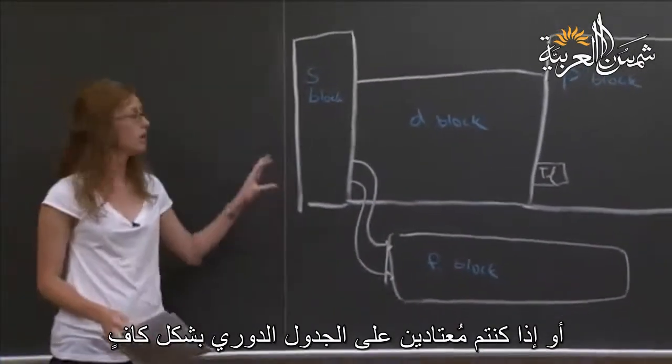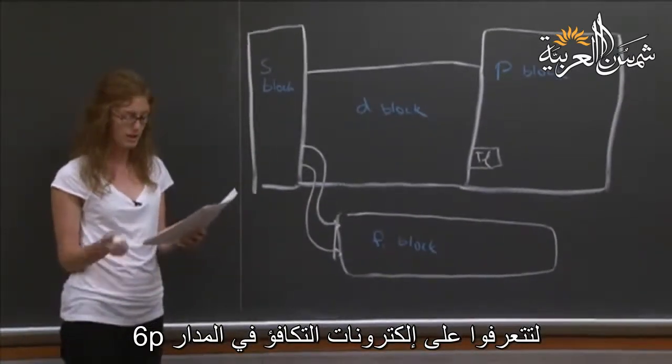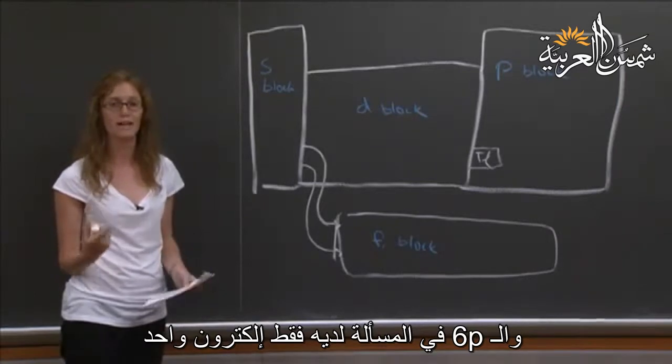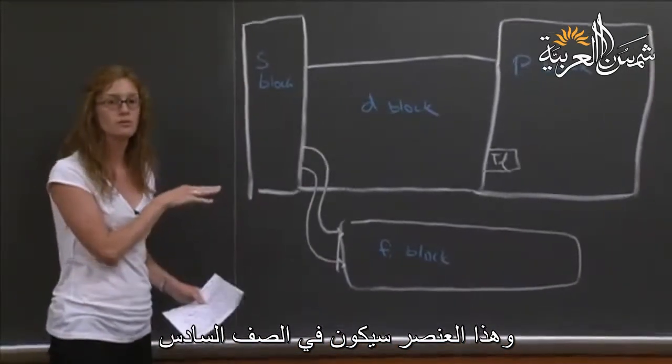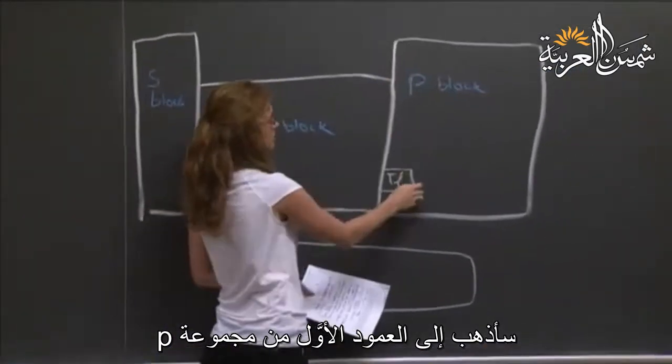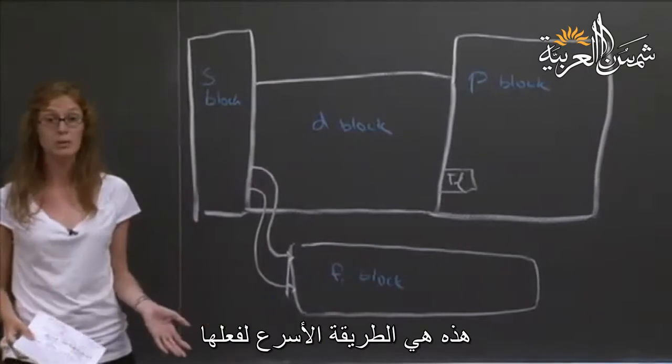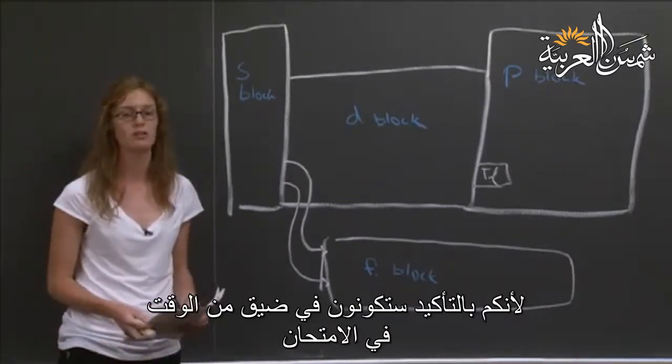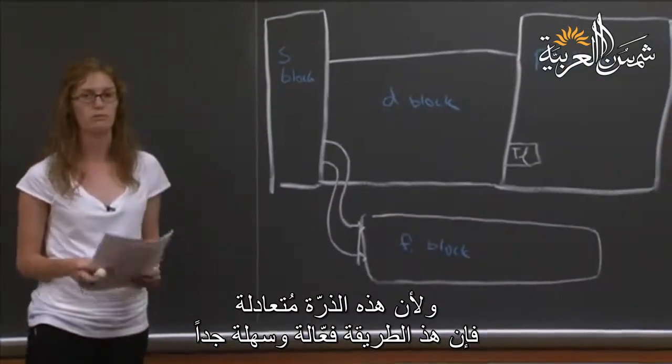Or, if you are familiar with the periodic table enough that you can recognize the valence electrons are in 6p, and the 6p only has one electron in it. That tells me xenon's in row 5. This element's going to be in row 6. I go to the first column of the p block, which signifies that there's one electron in that 6p orbital, and I see that it's thallium. That's the quicker way to do it on an exam. You might want to be that familiar with the periodic table because you are certainly time-crunched a lot of times. Because that's a neutral atom, that method will work very easily.